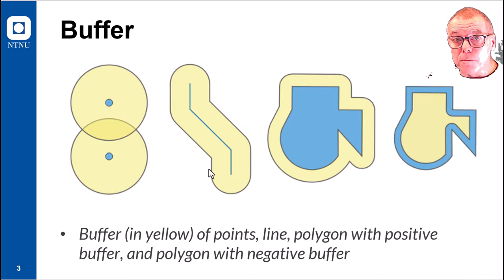You can perform buffer on point, line, and polygon features, but the output is always a polygon feature. So no matter what the input geometry is, the resulting feature class or shapefile is always a polygon feature.